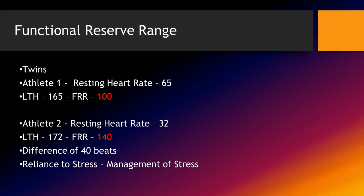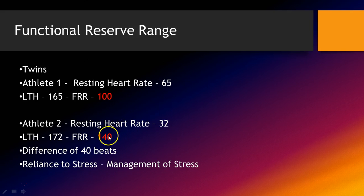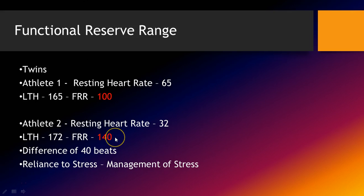Why is this important? This tells me that athlete two can handle much more stress. The athlete with the functional reserve rate of 140 versus his brother can better handle the stress of the workout. If they do the same workout, athlete one may take days to recover while athlete two may take only hours — because the impact of the workout is not the same on each of these athletes.